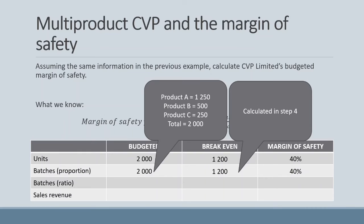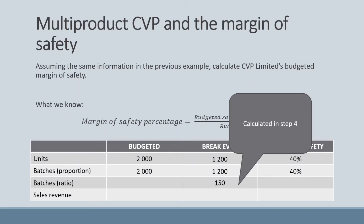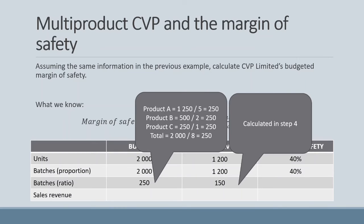Next, using batches with the ratio method, our breakeven batches is 150 from step 4. To calculate budgeted sales batches, we can take any product's budgeted sales and divide by its component in the ratio. Our ratio was 5A to 2B to 1C with a total batch size of 8. Dividing budgeted A sales of 1,250 by 5, B sales of 500 by 2, or total sales of 2,000 by 8 all give 250 budgeted batches, yielding a margin of safety of 40%.